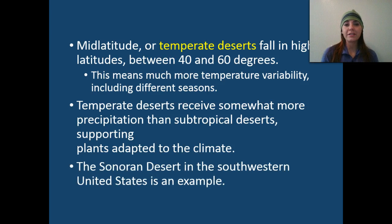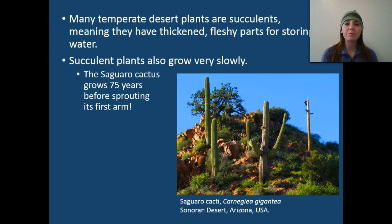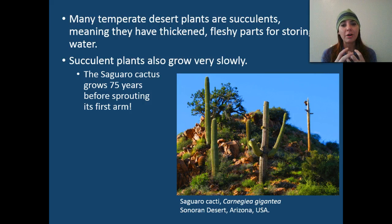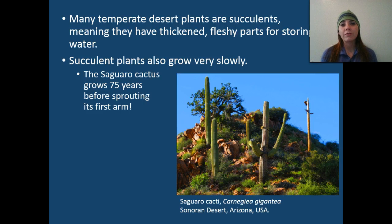The Sonoran Desert in the southwestern United States is a prime example of a temperate desert. Many temperate deserts have plants called succulents, meaning they have a very thick, fleshy part for storing water, and if you touch it, it's almost waxy — it's trying to conserve as much water as possible. Succulent plants also grow extremely slowly. A big example is saguaro cactuses — it takes them 75 years just before they sprout their first arm. This is a prime example of a K-selected species, meaning they have few offspring and take a very long time to grow and develop, versus R-selected species, which have tons of offspring with a very rapid life cycle.